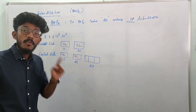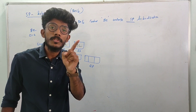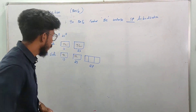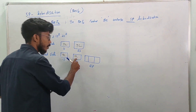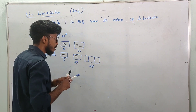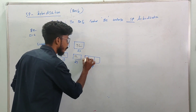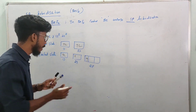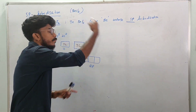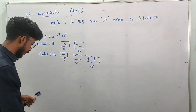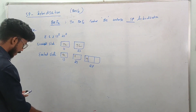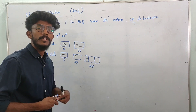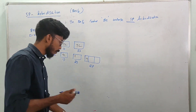When we add energy, one electron from the 2s orbital is shifted to the 2p orbital. So in the excited state, beryllium has one electron in 2s and one electron in 2p.